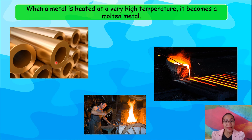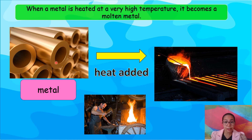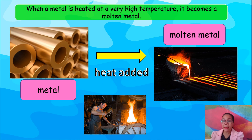This is a metal. It is solid. It is hard. But when heat is added — you put it on fire — what will happen to the metal? It becomes a molten metal. When a metal is heated at a very high temperature, it becomes a molten metal.